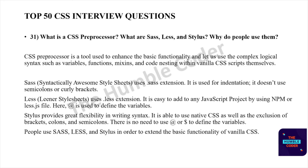What is a CSS preprocessor? What are SASS, LESS, and Stylus, and why do people use them? A CSS preprocessor is a tool used to enhance basic functionality, letting us use complex logical syntax such as variables, functions, mix-ins, and code nesting within vanilla CSS. SASS — Syntactically Awesome Style Sheets — uses the .sass extension, uses indentation, and does not use semicolons or curly brackets. LESS — Leaner Style Sheets — uses the .less extension and is easy to add to any JavaScript project using npm or a less.js file. The @ symbol is used to define variables in LESS.